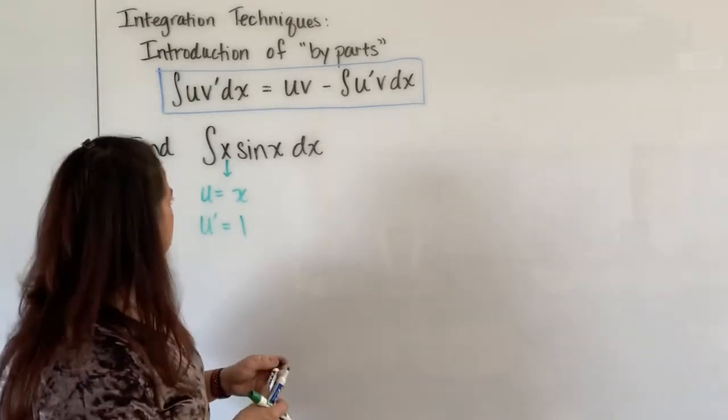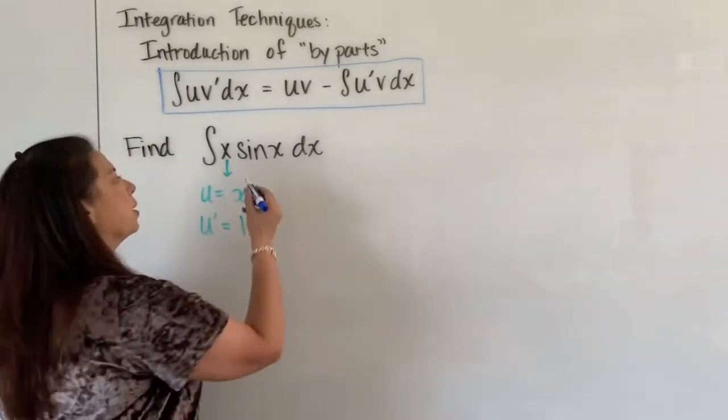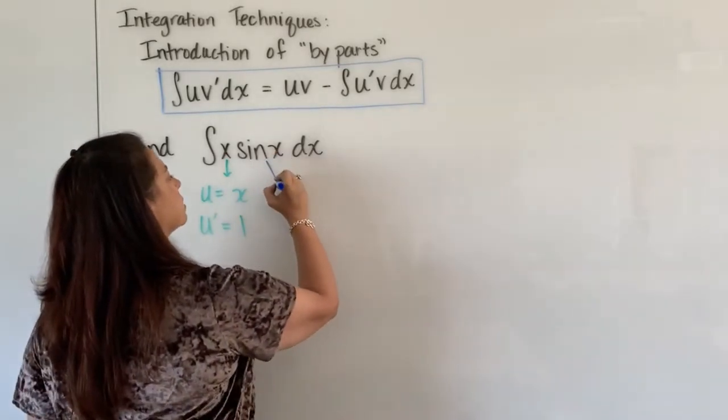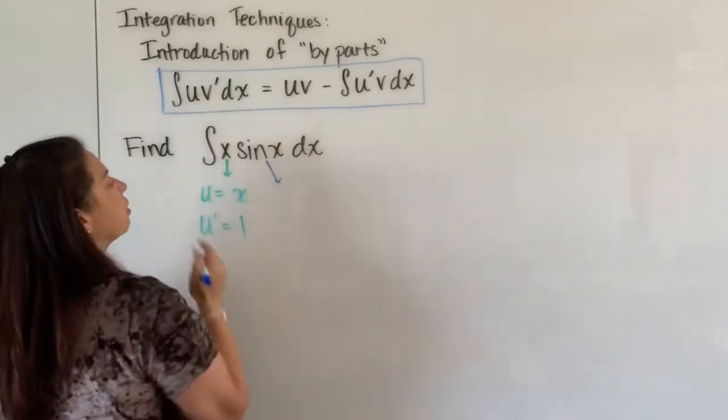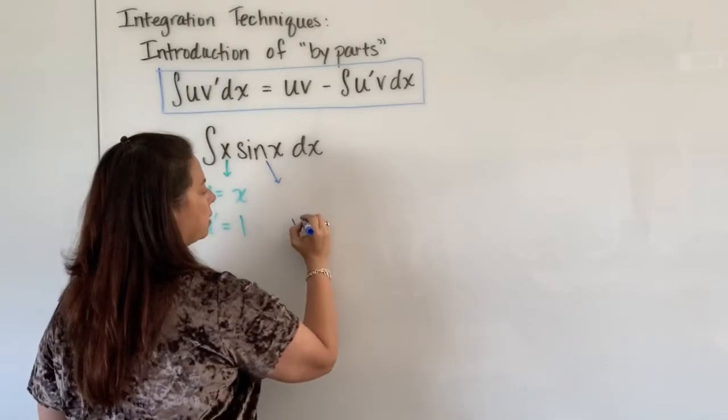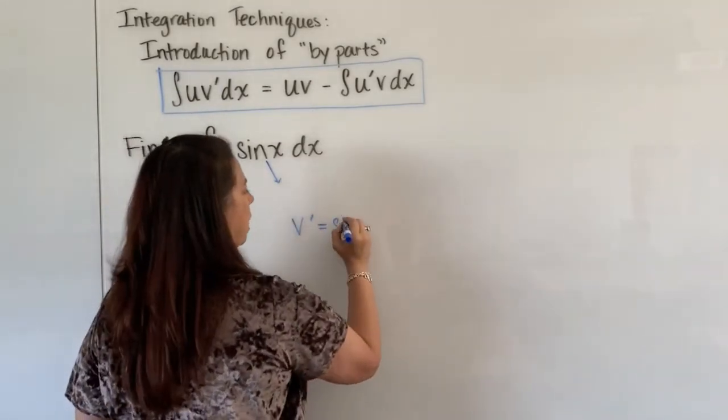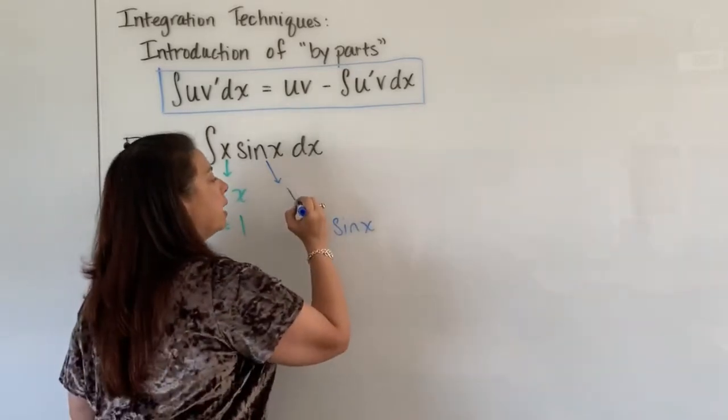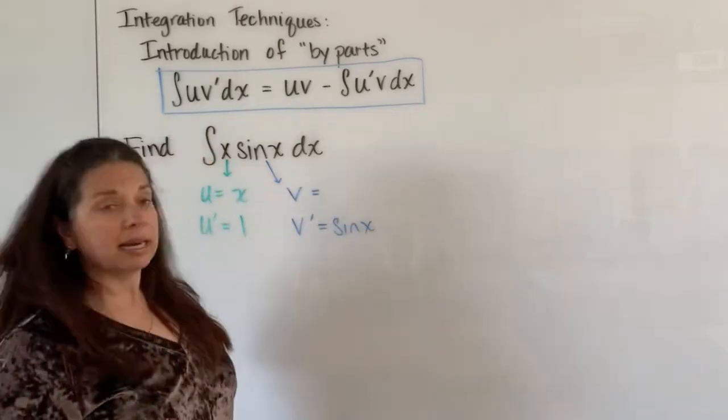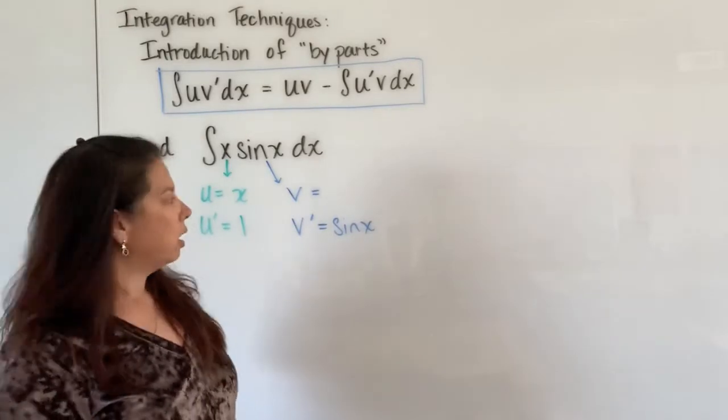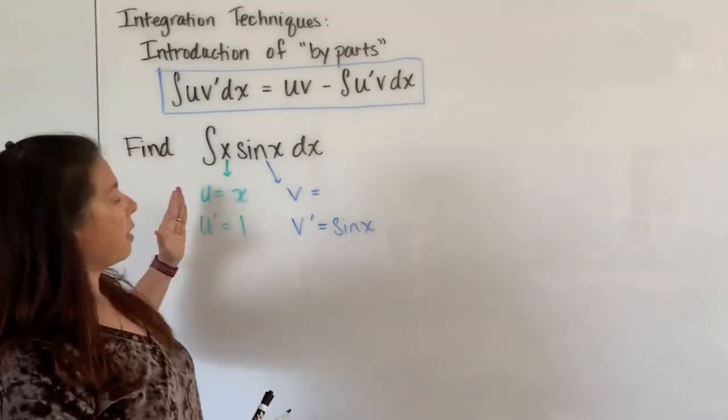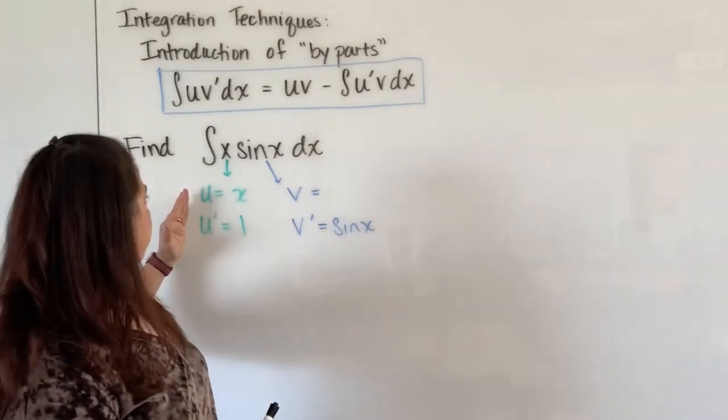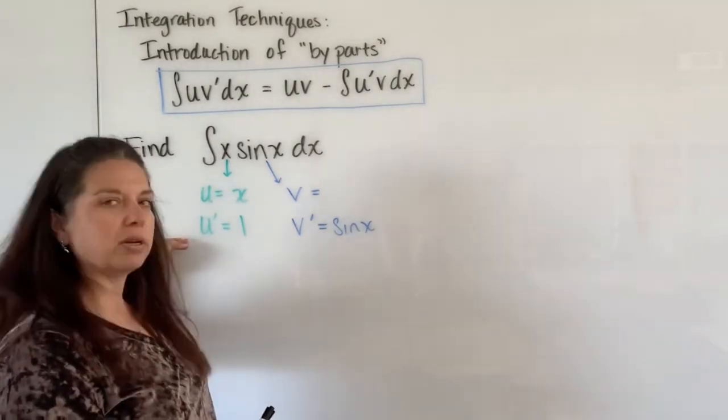So u is going to be x, derivative of u is the derivative of x. We've got that part done but the second part here, this sine x will be matched up with our v prime. So I'm going to write this here that v prime is our sine x. Okay now I have to think, well if v prime is sine x what is v?